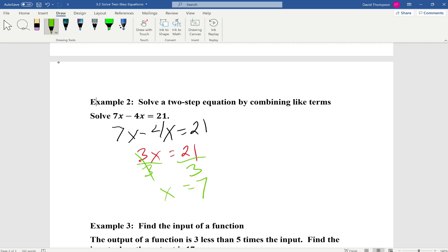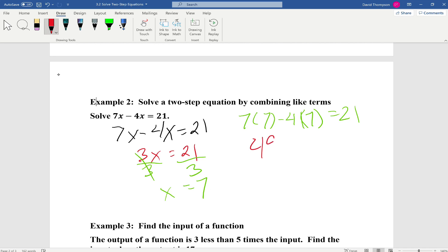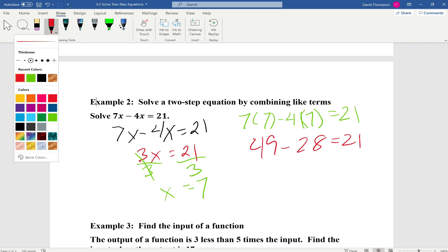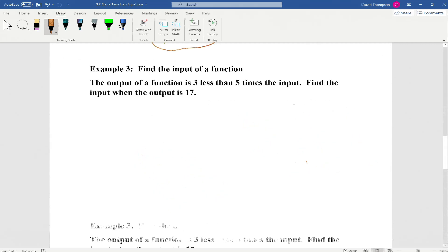We can plug that into our original equations to confirm. So 7 parentheses 7 minus 4 parentheses 7 equals 21. 7 times 7 is 49. 4 times 7 is 28, and 21. 49 minus 28 is 21. So it checks out, and our correct answer is x equals 7, and we are done.